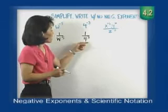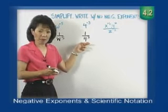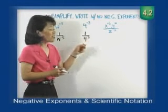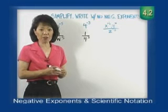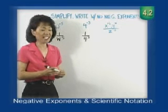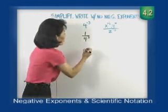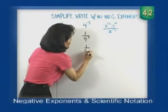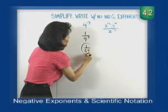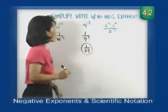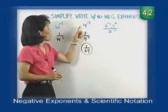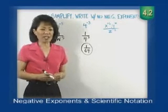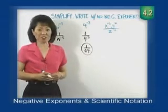Now we could take this one just a bit further by simplifying. Four to the third is four times four, which is sixteen, times four, which is sixty-four. So we can really write this one as one over sixty-four. So four to the negative three is just a fancy way of saying one over sixty-four.